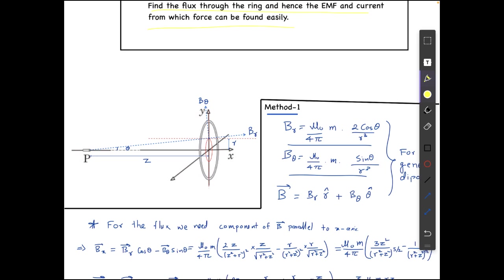BR equals to mu not by 4 pi times m times 2 cos theta by r cube and B theta can be written as mu not by 4 pi times m times sin theta over r cube. From here, for the flux through the ring we need a component of B which is parallel to the x axis.